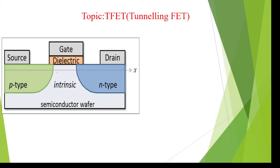Here you can see the fabrication process for the tunneling field effect transistor. The diffusion area is like a tunnel shape — whether electrons or holes, they are inserted in a tunnel shape — so the channel length between source and drain is very small.